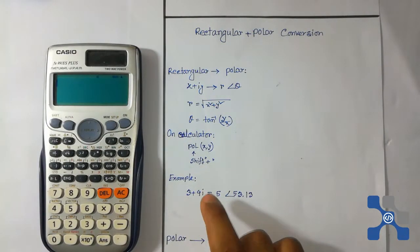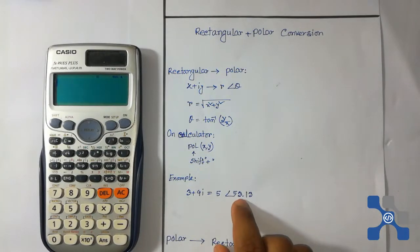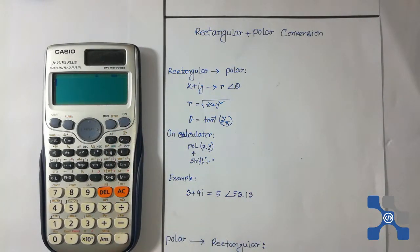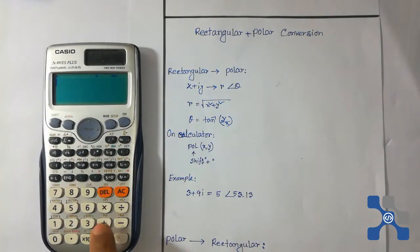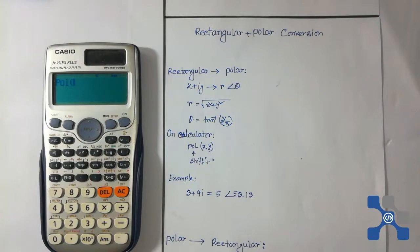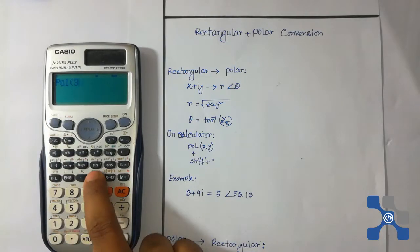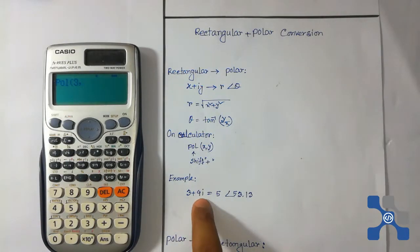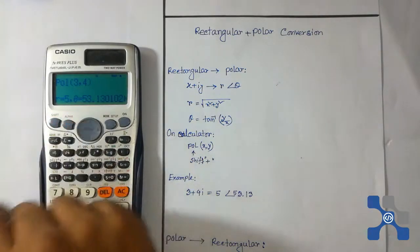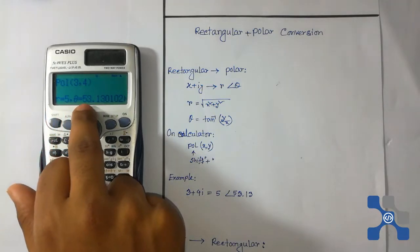The example is 3 plus 4i. Now we are going to convert it to polar form. Press shift button and then press the plus button for the POL function. Then press 3, press shift and the close bracket button, then press 4, close bracket, and press equal. We see that r equals 5 and theta equals 53.13 degrees — r is the radius and theta is the angle.